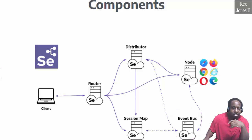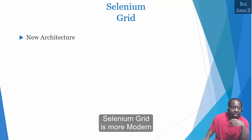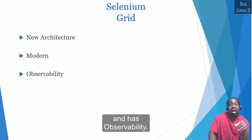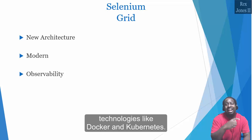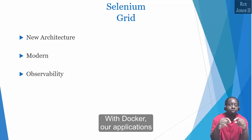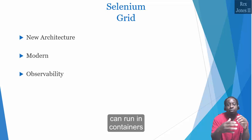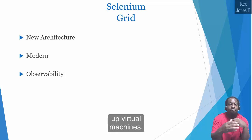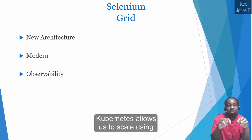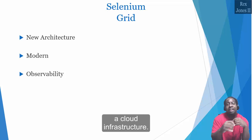In addition to the new architecture, Selenium Grid is more modern and has observability. By being more modern, we can leverage up-to-date technologies like Docker and Kubernetes. With Docker, our applications can run in containers and not worry about setting up virtual machines. Kubernetes allows us to scale using a cloud infrastructure.